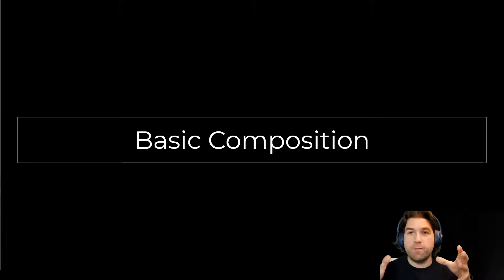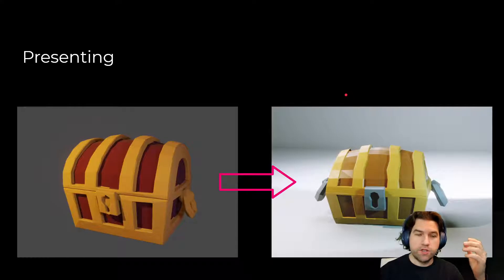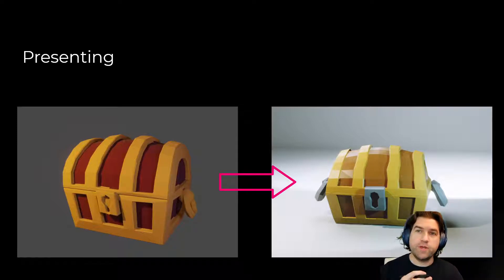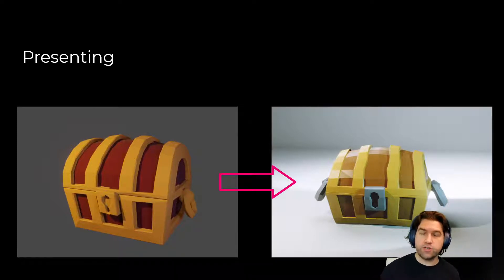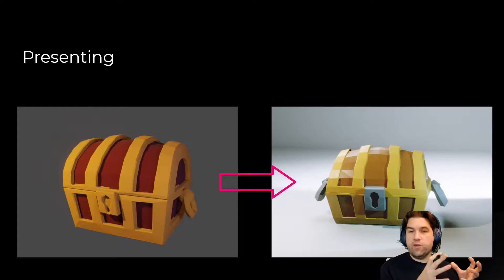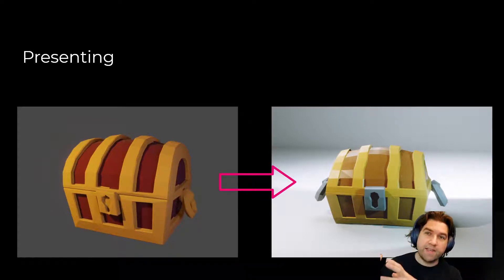Today I want to talk to you about the basics of composition. When you're presenting your work, having a good viewpoint, a good composition, and good lighting is all really important — especially since in 3D art we don't start with composition, unlike painting or drawing where they sketch things out first. We actually build our things and then put them into a composition last.